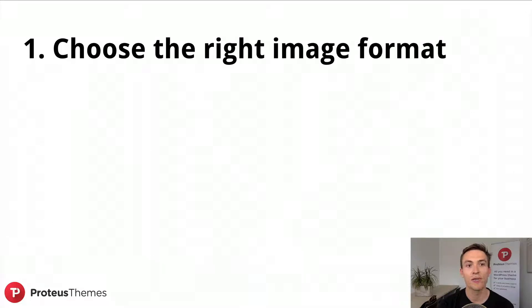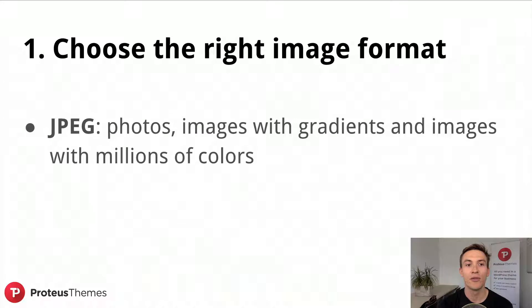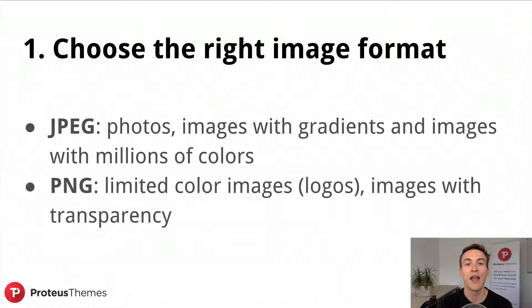The first step is that you should choose the right image format. There are two popular image formats. The first is JPEG, which is suitable for photos, images with gradients, and images with millions of colors. The other one is PNG, which is very suitable for limited color images — for example logos, charts, or graphics — and images with transparency.